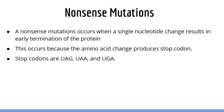Next, let's talk about nonsense mutations. Nonsense mutations occur when a single nucleotide change results in early termination of a protein. Nonsense mutations always result in proteins that are shorter and smaller than the original version. This occurs because a change in a single nucleotide produces a stop codon, such as UAG, UAA, and UGA. You need to be familiar with these stop codons for USMLE Step 1.